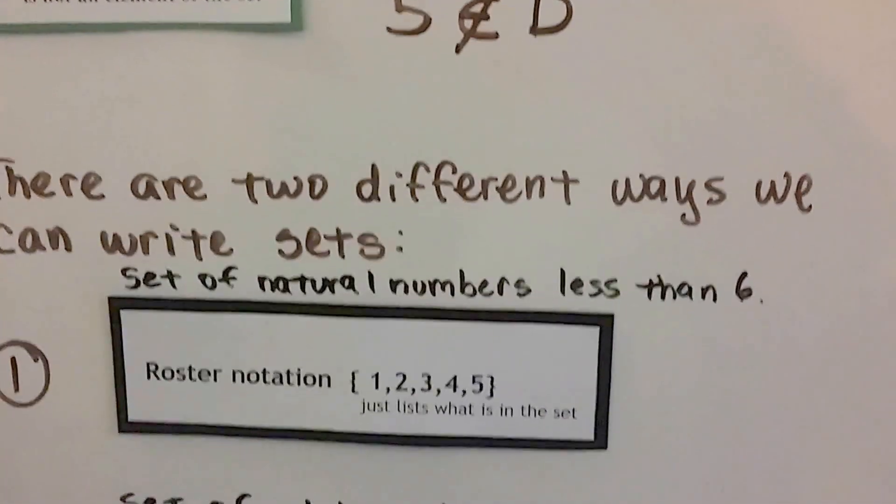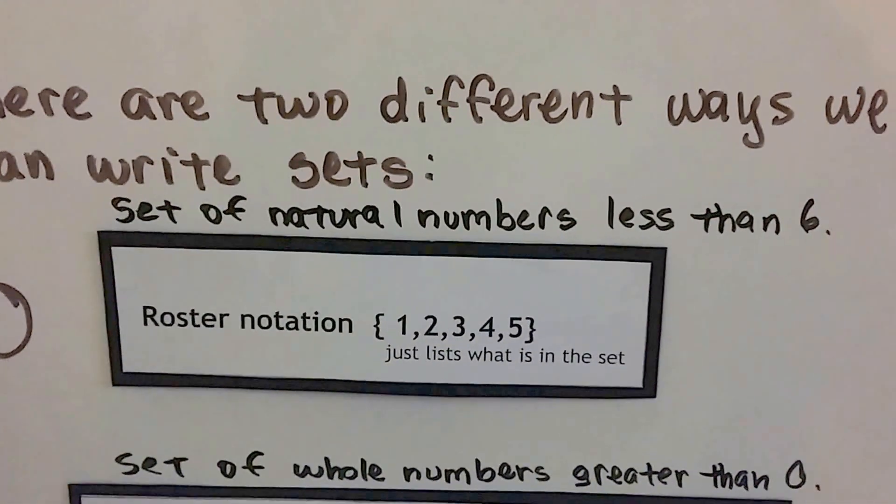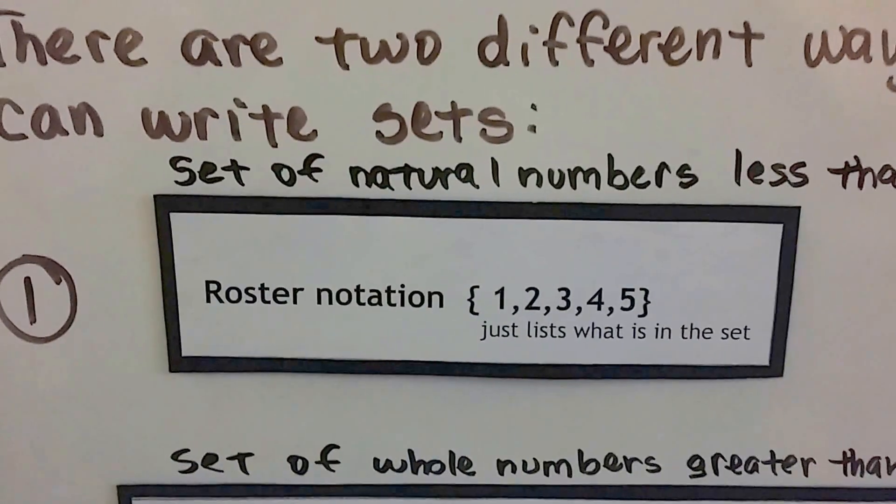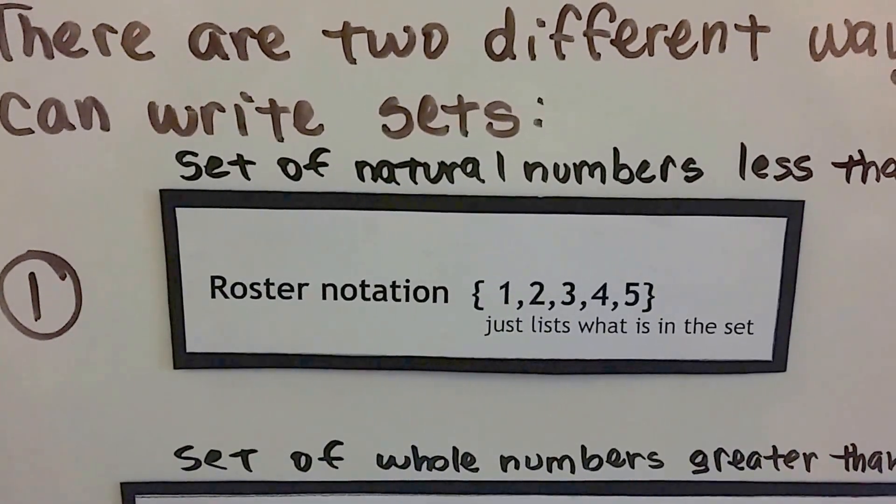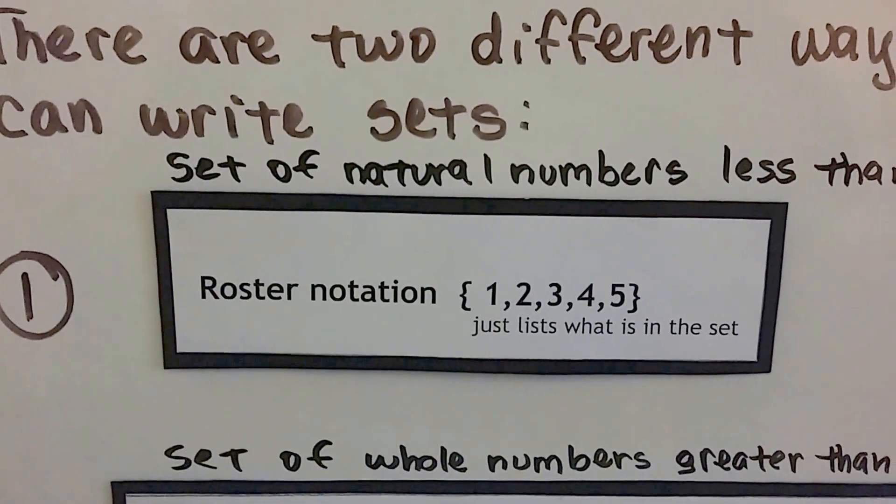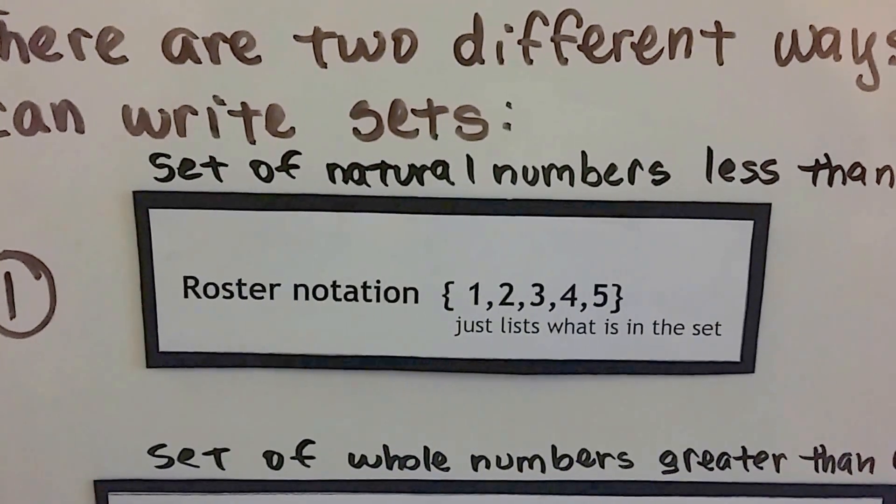There's two different ways that we can write sets. The set of natural numbers less than 6, in Roster Notation, it would just be 1, 2, 3, 4, 5. It just lists what's in the set. Those are the natural numbers that are less than 6.